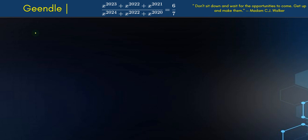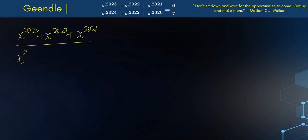Hello guys, welcome to the channel. Today we're going to be solving this problem here. We have x to the 2023 plus x to the 2022 plus x to the 2021, all over x to the 2024 plus x to the 2022 plus x to the 2020, and this is equal to 6 over 7.